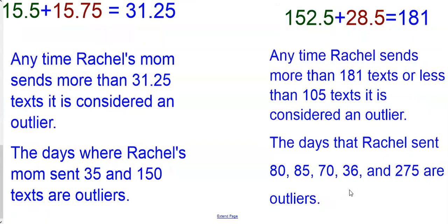When we go back to the original data, we can see that there are different days where she sends 80, 85, 70, 36, and 275 texts, and those are considered outliers. They are beyond what is normal for Rachel's text messaging.